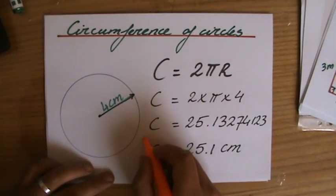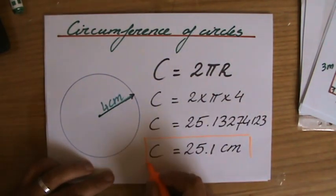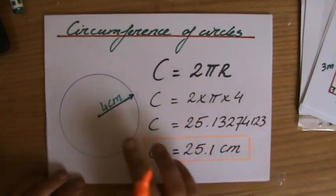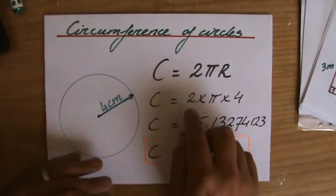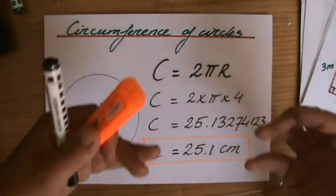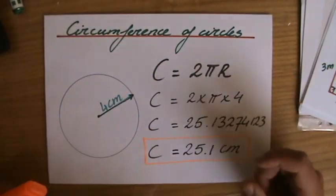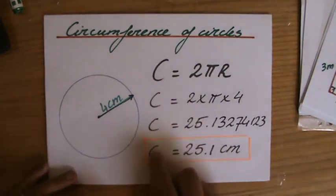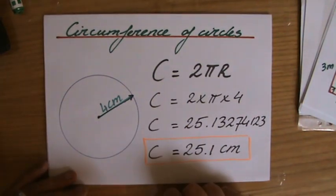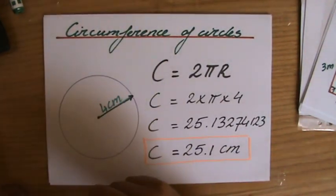So circumference of a circle: 2πr. That's a formula you need to know. All you have to do is find the radius. It's given to you, 4. So 2 times pi times 4. Then you grab your calculator, write it down. It doesn't take very long. Show your workings and your final answer correct to three significant figures. Don't forget that: 25.1 centimeters. Go to the next video. I'm going to show you something new.